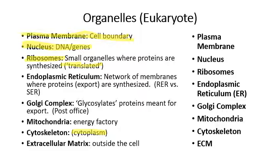Just outside the nucleus — and actually attached to it — we have an endomembrane structure called the endoplasmic reticulum. The word reticulum means a bunch of folds, so we have this highly folded membrane which is a network of membranes where proteins are synthesized — but specifically proteins that are meant to be exported out of the cell. That distinction is critical.